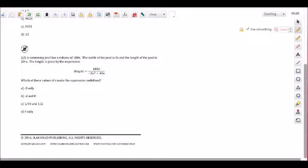Alright, so here we go. Question number two: a swimming pool has a volume of 180x. The width of the pool is 2x, the length of the pool is 20 minus x. The height is given by the expression: height equals 180x over minus 2x squared plus 40x. Which of these values of x make the expression undefined?